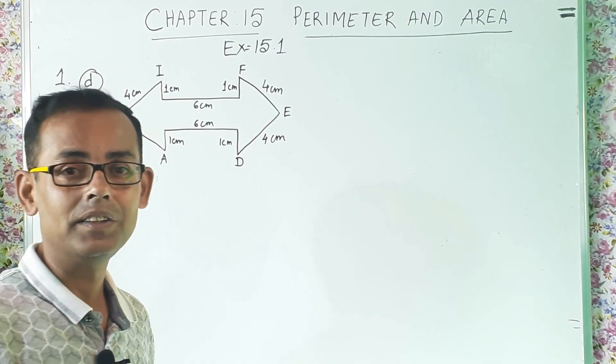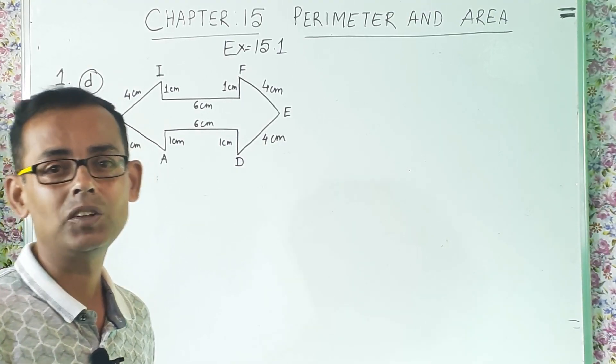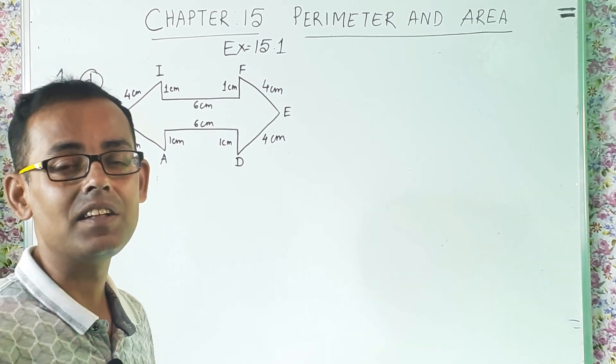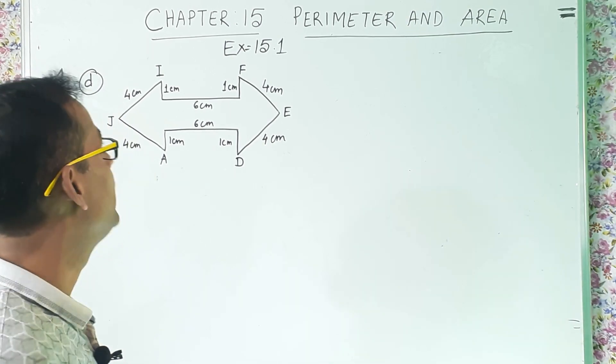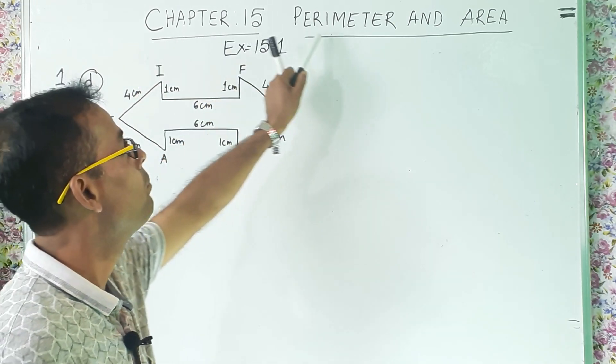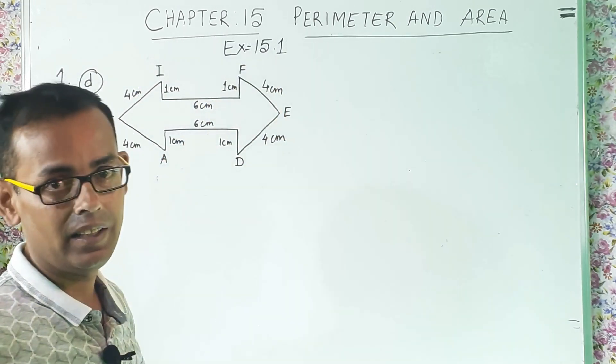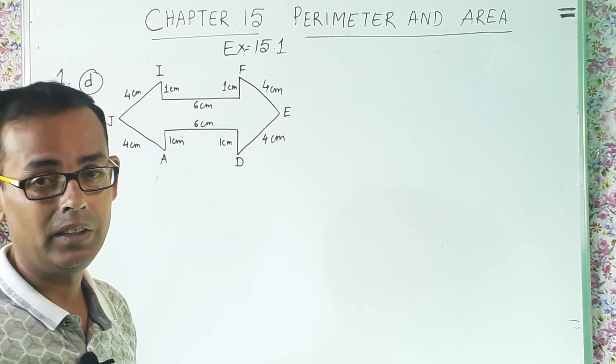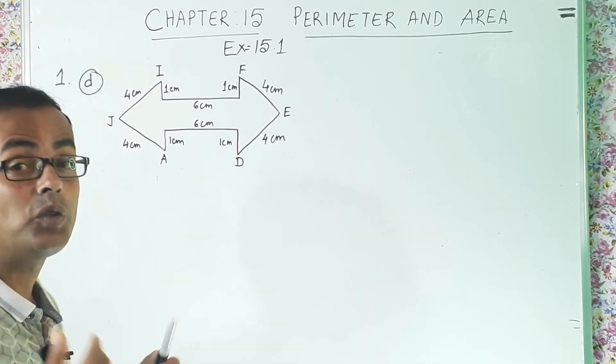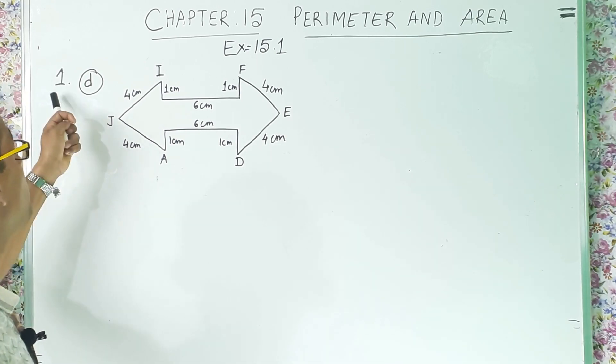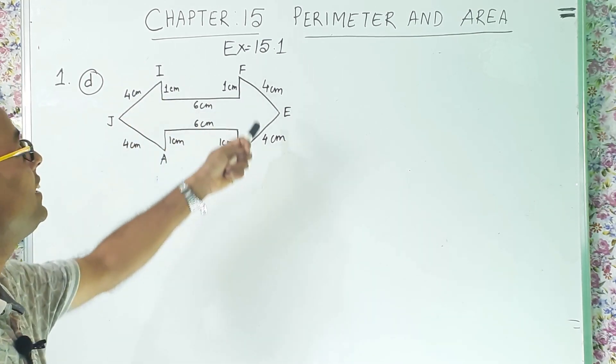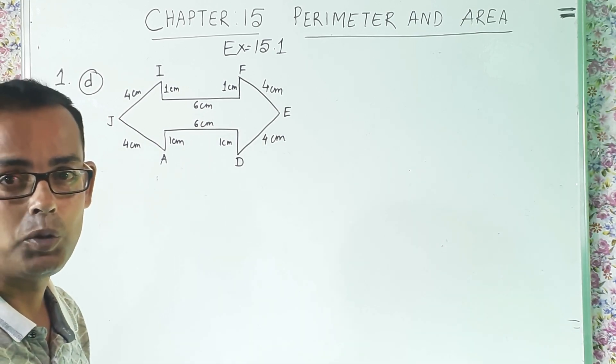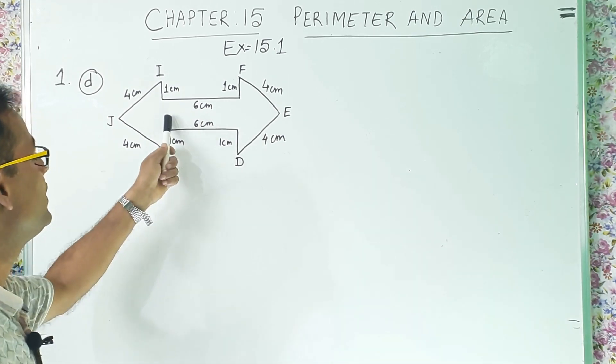Students, this is the second part of this chapter for class 6, Class 6 Mathematics and the name of the chapter is chapter 15, Perimeter and Area and we are solving exercise 15.1. And today, we are going to solve question number 1D and the figure is given here. You can refer to your textbook, the same figure is in your textbook.